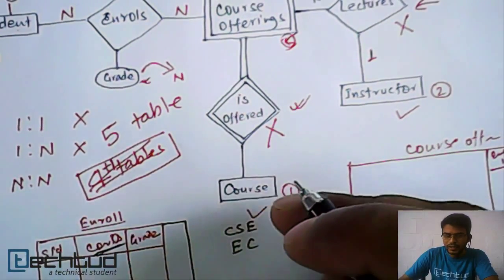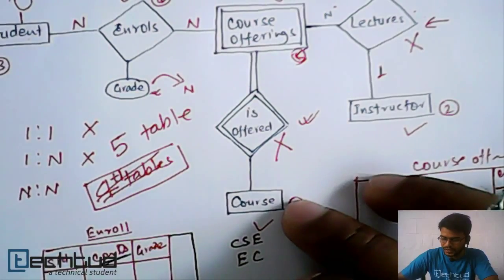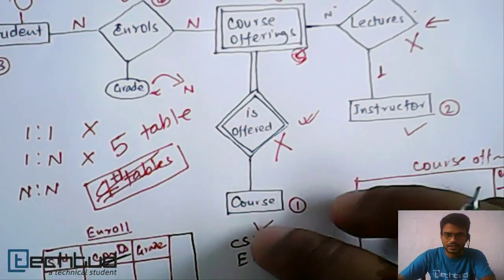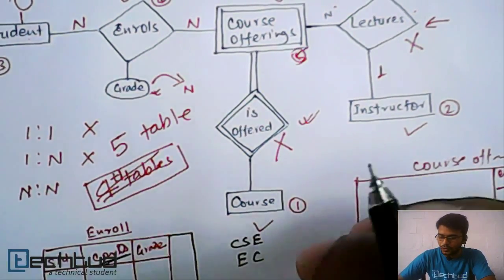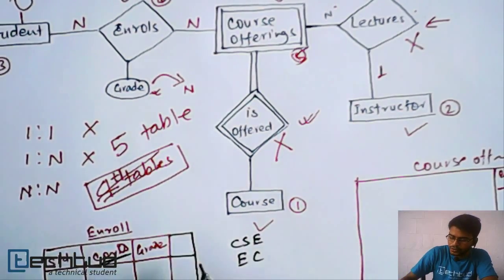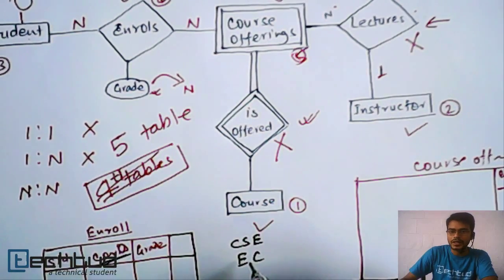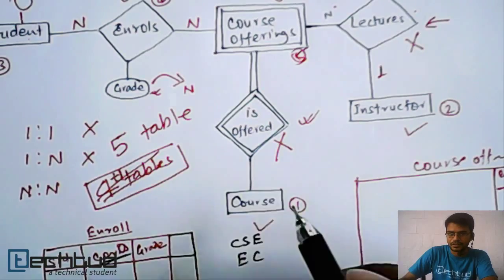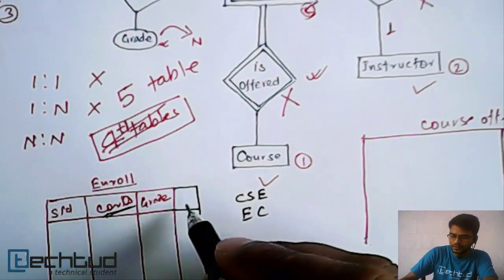This owner attribute, owner entity. This course is the owner entity like CSE and EC. So in this case, we will also store the key attribute of this owner entity. So here we will also have this CID.